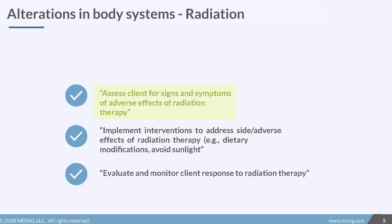Here's what the test plan says about what you need to know for radiation. You need to be able to assess the client for signs and symptoms of adverse effects of radiation therapy. You need to implement interventions to address side and adverse effects of radiation therapy — for example, dietary modifications and having the client avoid sunlight. And finally, you have to evaluate and monitor the client response to radiation therapy.